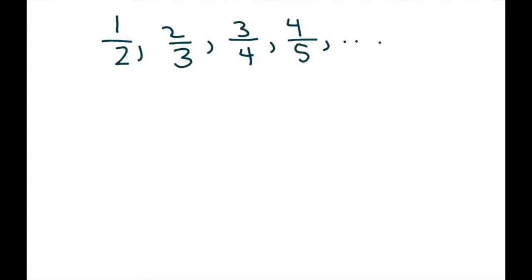If I have a sub i, these are called index numbers. Basically, this is our first term, second term, third term, and this is our fourth term.